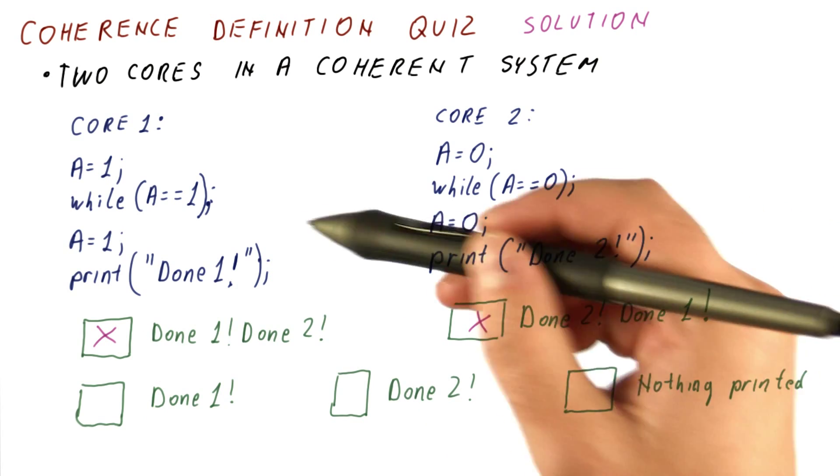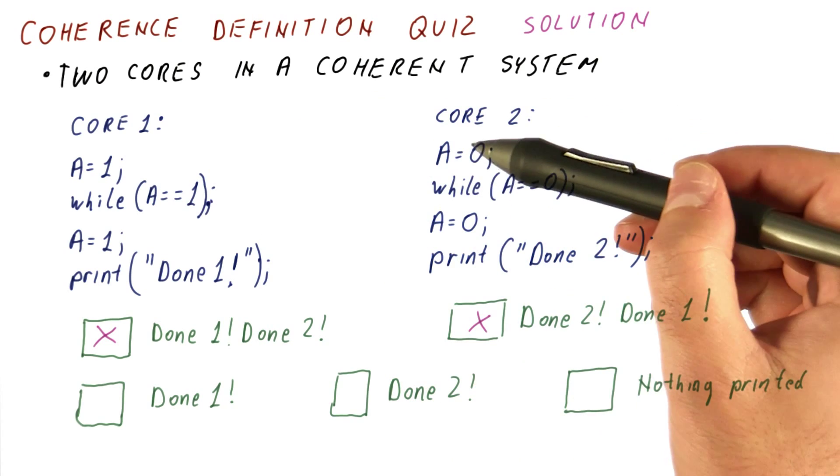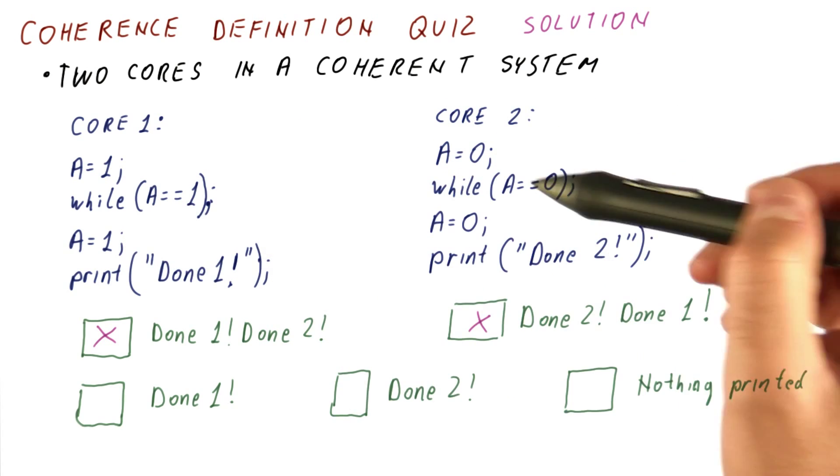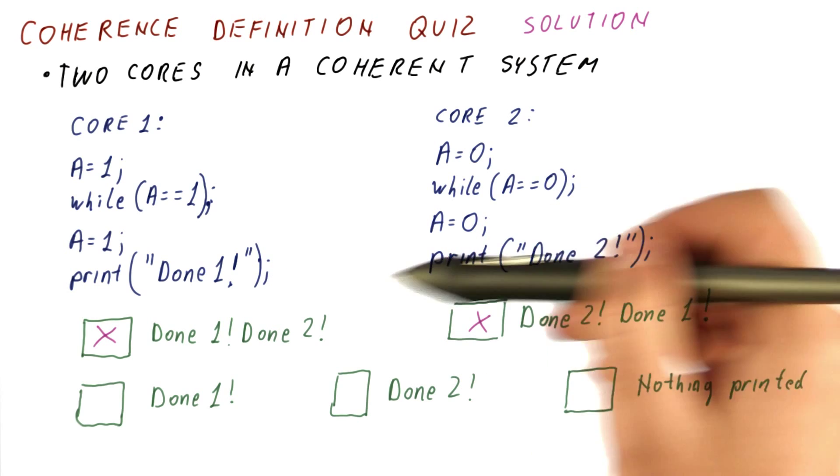They basically depend on after core one waits for core two to release it, and then it itself releases core two, who gets to print first.